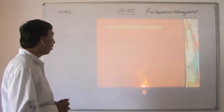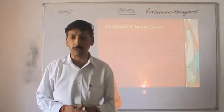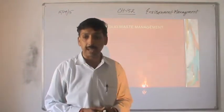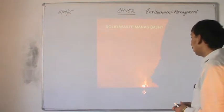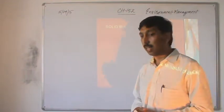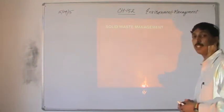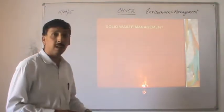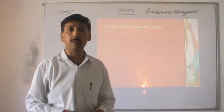Let us see what are the various types of solid waste which are released from several sources. First one is municipal waste. Second one is industrial waste. Third one is agricultural waste. Then we have waste which is generated from medical and hospitals, waste generated from mining, and a very important variety of waste which is from sewage or sewage sludge. These are some of the varieties of waste emitted from these sources, and if these are not managed in time, it will cause adverse effect.